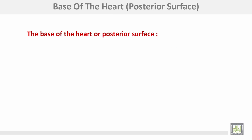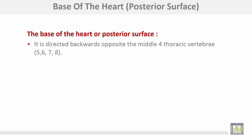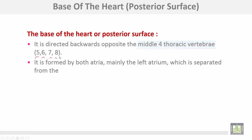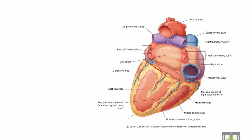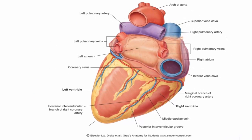The base or posterior surface of the heart is directed backwards and upwards, opposite the middle four thoracic vertebrae: numbers five, six, seven, and eight. It is formed by both atria, mainly the left atrium, which is separated from the vertebral column by the pericardium, the esophagus, and the descending aorta.